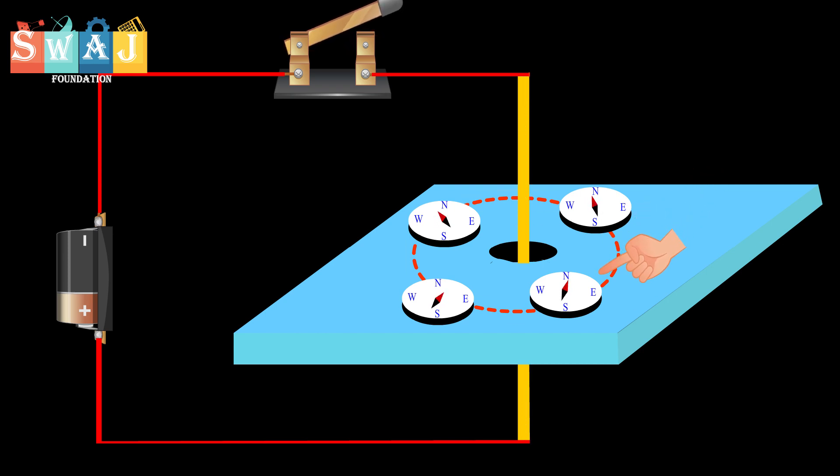When we open the switch again, the current through the wire is stopped. All the needles again point along the north-south direction.